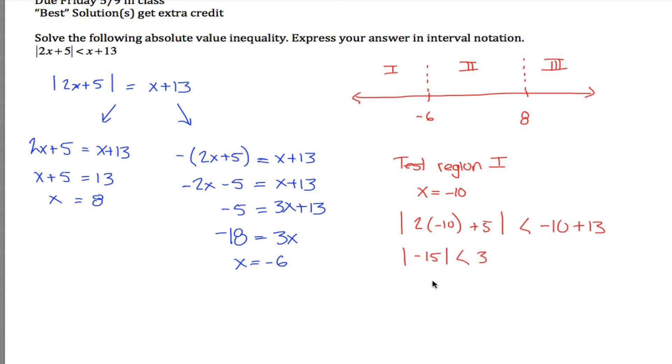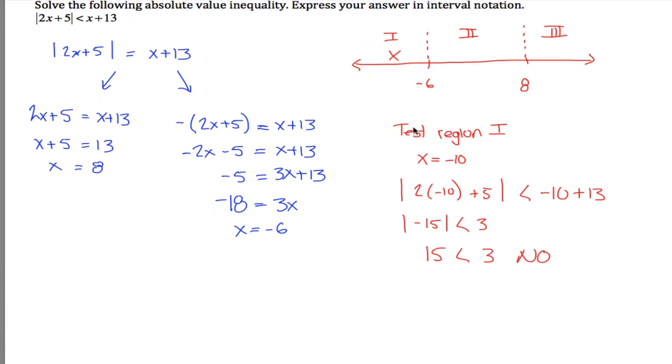And so the absolute value of negative 15 is positive 15 and 15 is not less than 3. This is a false statement. 15 is greater than 3. So what that means is negative 10 is not a solution to this inequality and if negative 10 is not a solution to this inequality, then no numbers in this region are solutions.